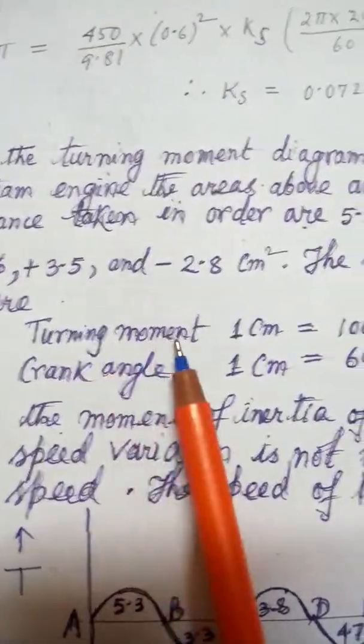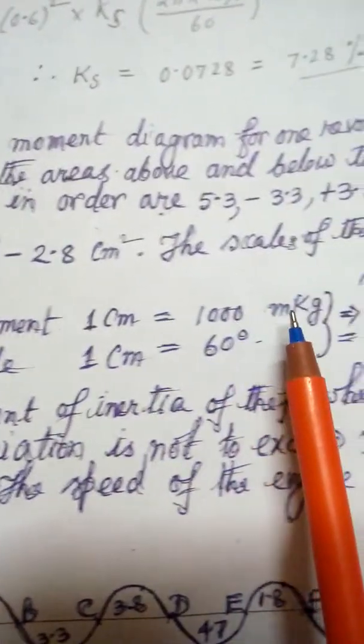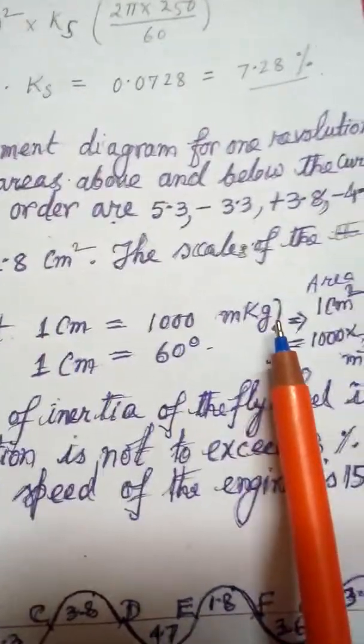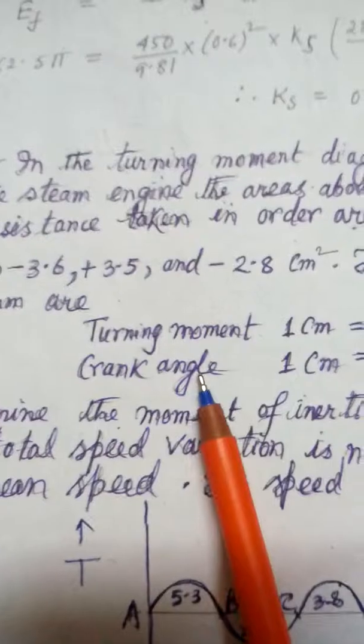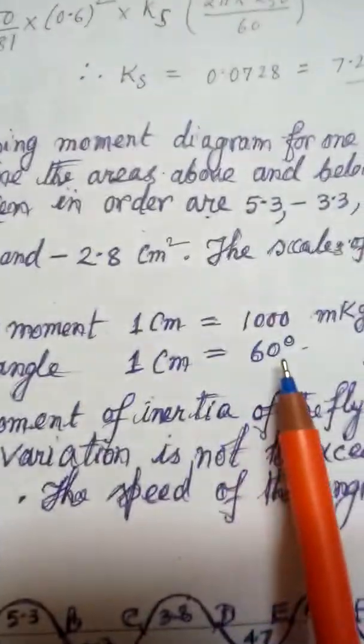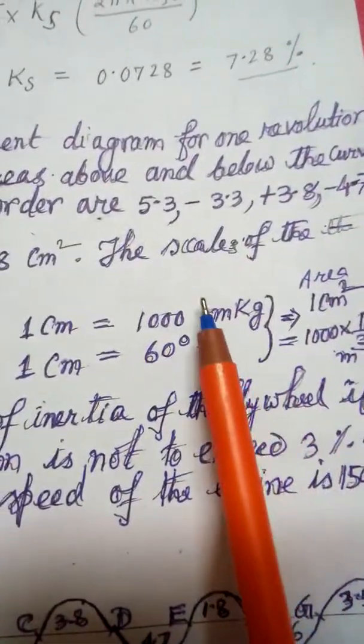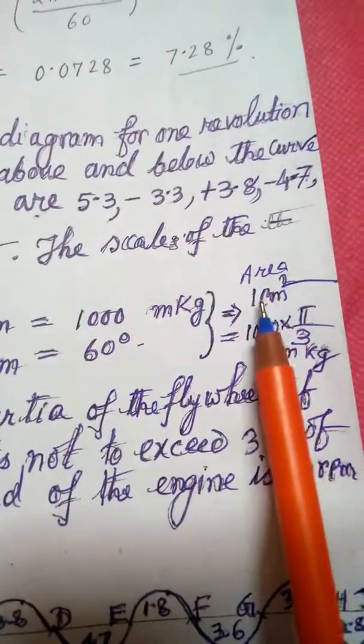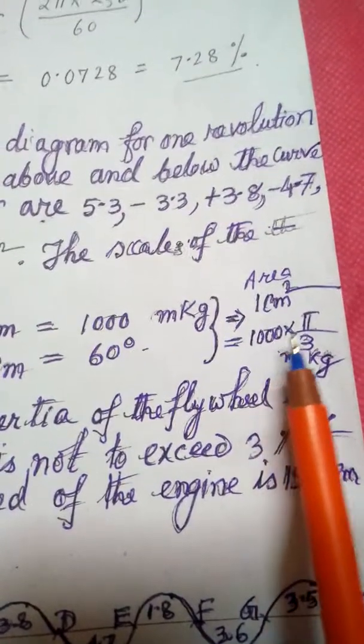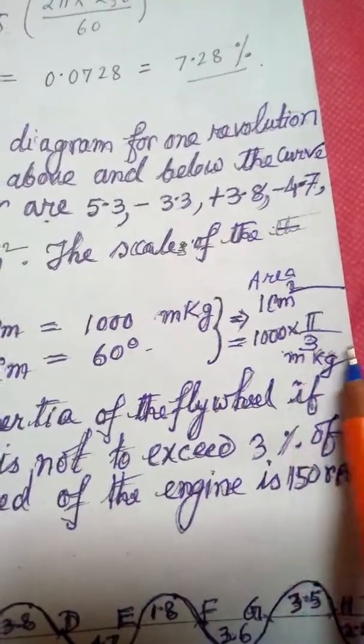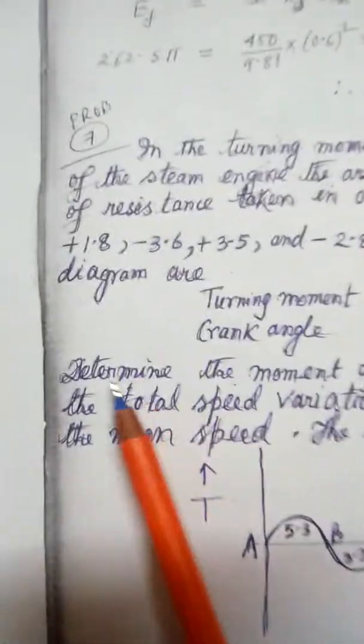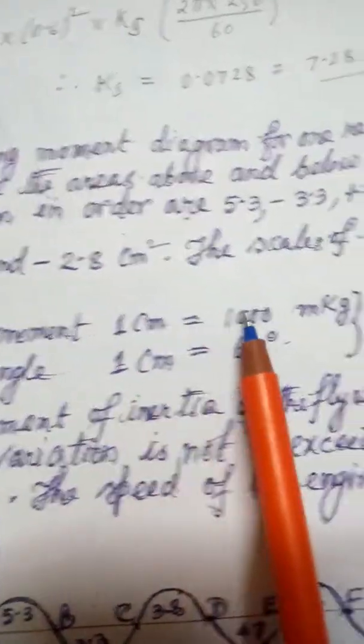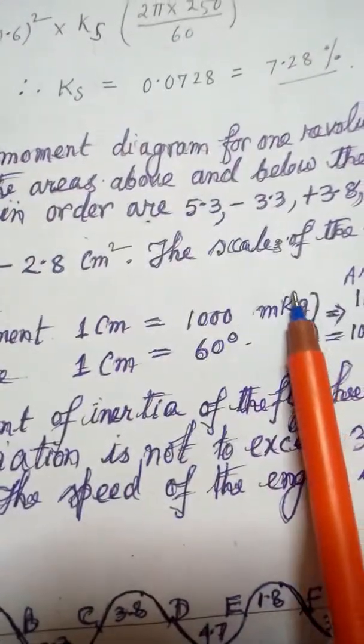Y axis turning moment: 1 centimeter equals 1000 kg meter, and crank angle: 1 centimeter equals 60 degrees. If you multiply this by this, one centimeter area would be 1 centimeter square equals 1000 times pi by 3 kg meter. You can multiply by g to get newton meter.